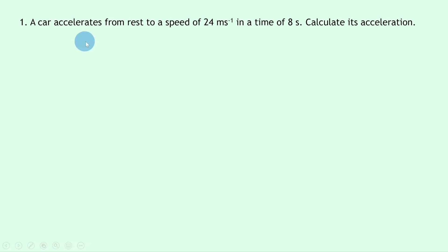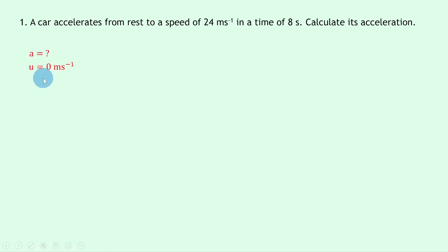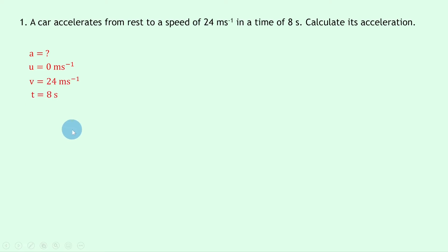So let's get started. Question one says a car accelerates from rest to a speed of 24 meters per second in a time of eight seconds. Calculate its acceleration. Writing down what we know from the question: we're trying to find the acceleration a, we know the initial speed u is zero meters per second because the car starts from rest, the final velocity v is 24 meters per second, and the time t is eight seconds.